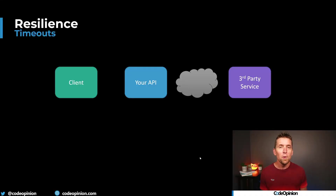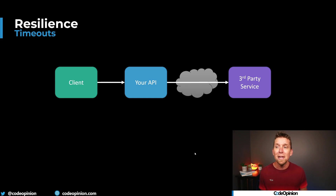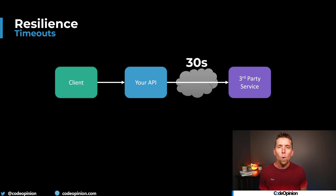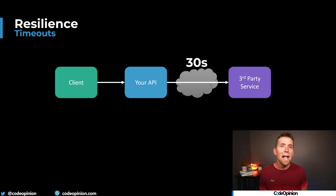Tip number two is having a timeout, and generally a quick timeout. You'll notice a thread between these tips: when we have a client make a request to our HTTP API and we need to make some synchronous requests to a third-party service — let's say an HTTP request — if that normally takes 500 milliseconds and that's totally fine, what happens if it suddenly takes 30 seconds? What happens to our system when that third-party service has degraded performance and we went from 500 milliseconds to 30 seconds? We want to have timeouts.